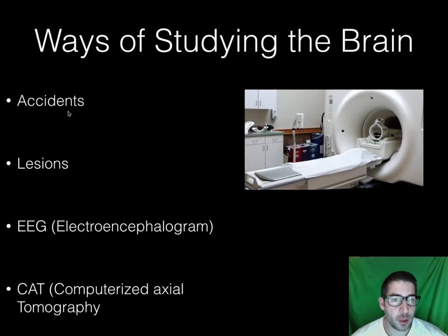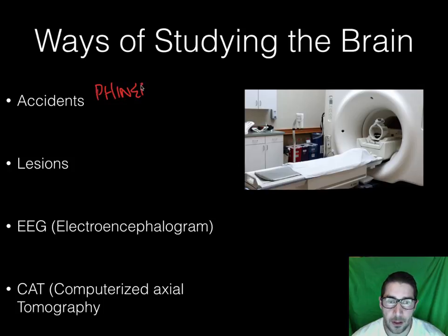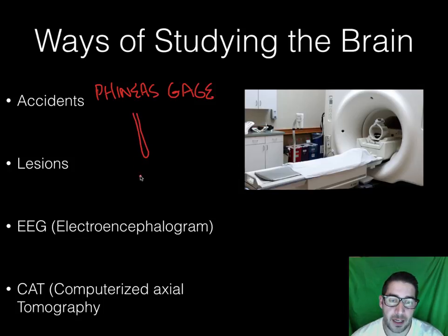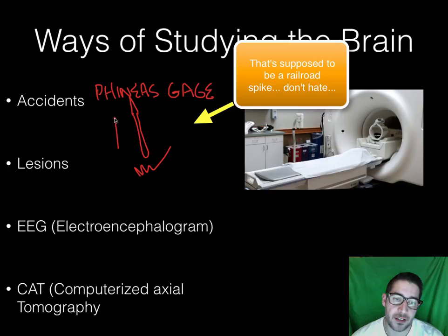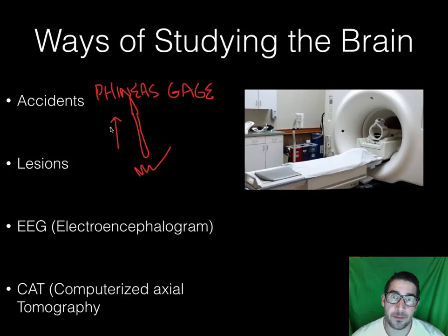We begin with the number one most awesome way to study the brain, which is unfortunately by people who've had accidents. When people have accidents, we can see how those accidents affected their brain. There's a guy every psychology student needs to know — Phineas Gage — one of the most famous accidents in psychology. Phineas was working on the railroad, driving spikes into the ground, blowing up with dynamite. The thing shot back up, pointy, right through his face, went through his eye and out through the top of his head. It didn't kill him. And so we were able to gather a lot of information based on what part of his brain was injured in the accident and how it was affected afterwards.